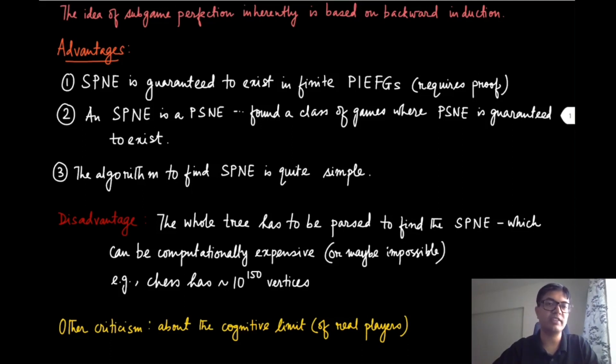then we could have conclusively given the answer. For small games like tic-tac-toe, we can actually list down the game tree and find the SPNE—it's a good exercise to find out that this SPNE is nothing but the draw guaranteeing strategy for both players. We know that there exists a strategy which guarantees the draw, and that will emerge as the SPNE of this PIEFG.